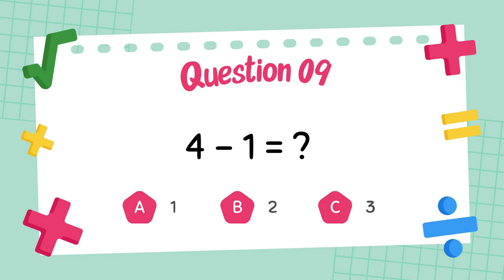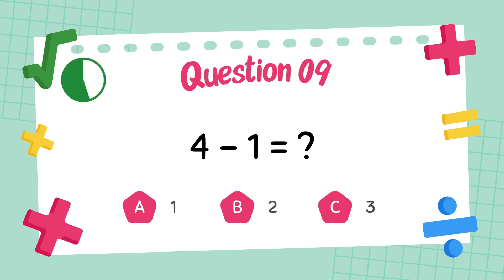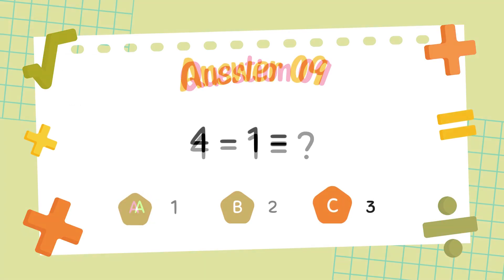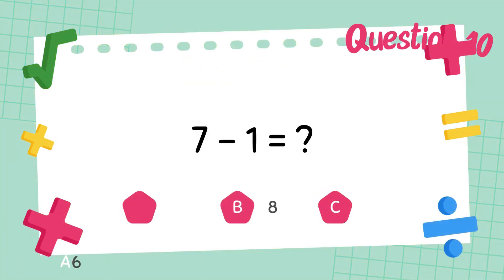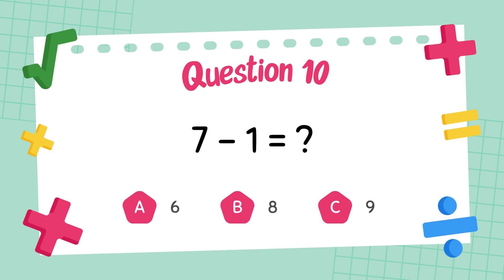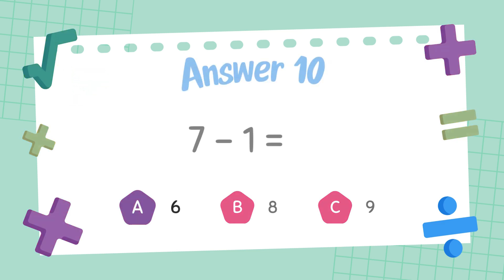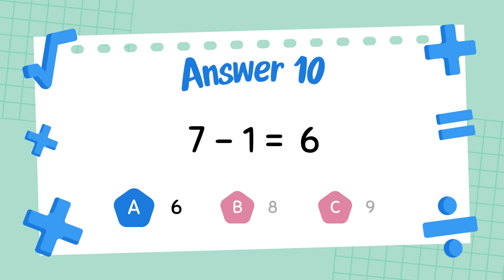What is 4 minus 1? The answer is 3. What is 7 minus 1? The answer is 6.